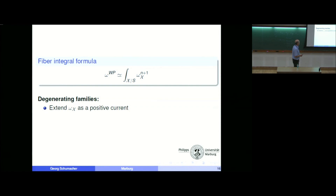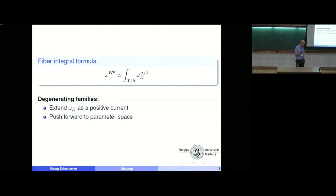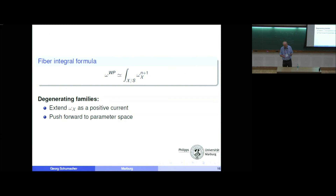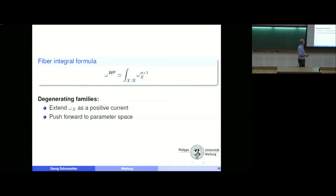We have a global 1-1 form naturally defined. If we restrict this global 1-1 form omega_X to a fiber, it is just the Kähler-Einstein form on the fibers. So the Kähler-Einstein forms on the fibers naturally fit together and come from a closed 1-1 form. This is just the curvature of the relative canonical bundle equipped with the metric originating from the volume forms on the fibers. The fiber integral formula, up to powers of 2 and π, is: take this naturally defined 1-1 form on the total space, and the fiber integral will reproduce the Weil-Petersson form on the moduli space. For an effective family, omega_X is not just positive on the fibers but also positive on the total space, which follows from a certain elliptic equation.